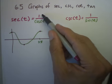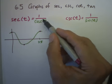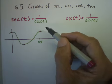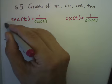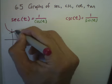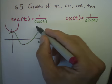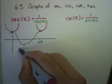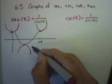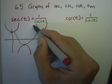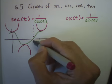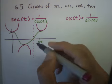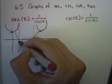So the smaller cosine gets, the bigger secant gets, and you get these loops that look like this. And when cosine is zero, secant is undefined of course, so you get an asymptote there and you get an asymptote there.